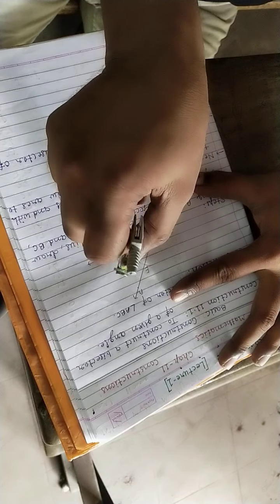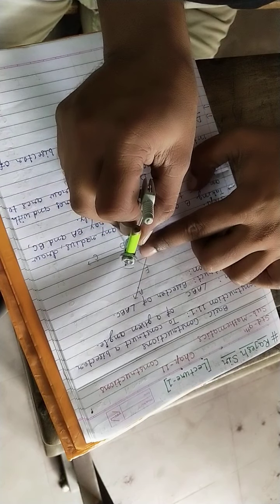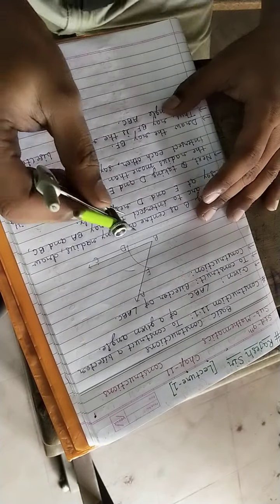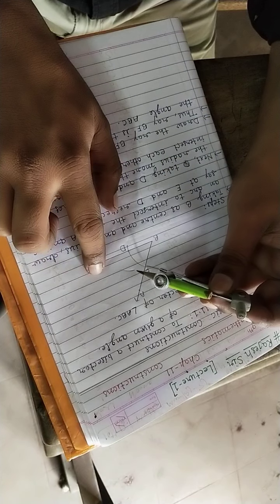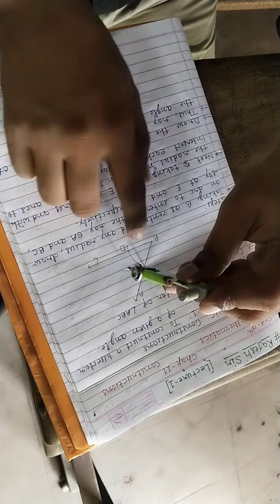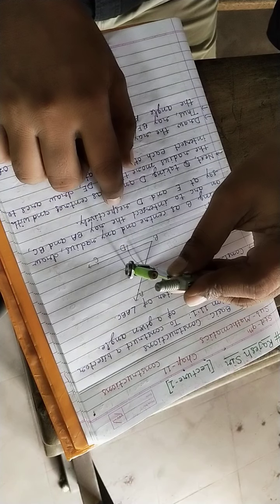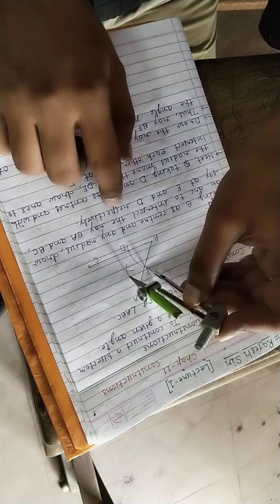Taking the center as D and more than half of DE as radius. Now similar radius we have to take. Now take the center as E, and by the same radius that we have taken previously, intersect the previously drawn arc. This is the second step.